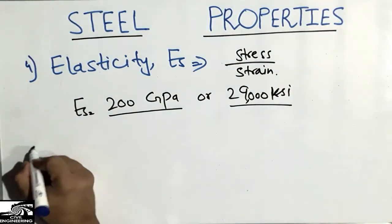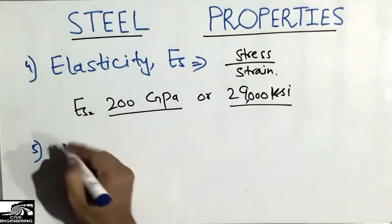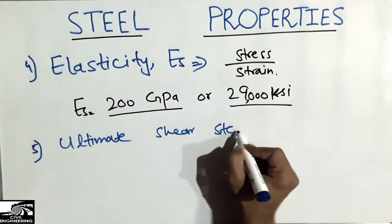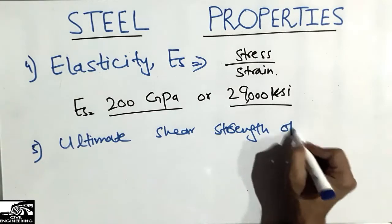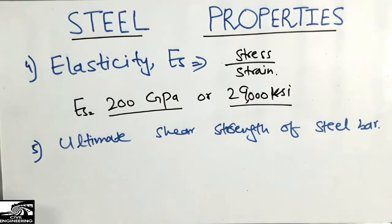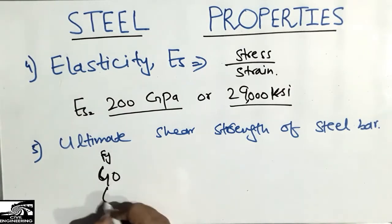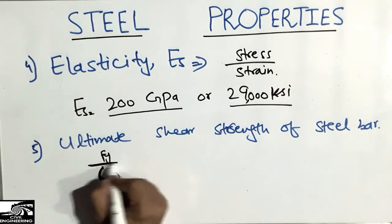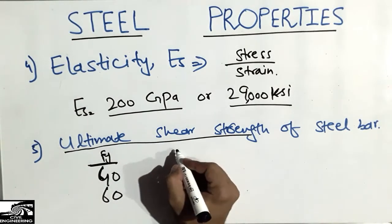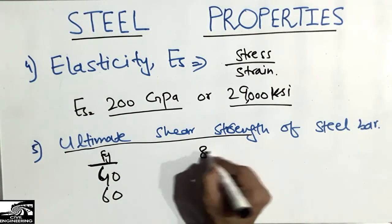The fifth and last property of the steel bar is the ultimate shear strength. As discussed, there are three different grades of steel, but the two most commonly used are Grade 40 and Grade 60. The ultimate shear strength is related to the yield strength — specifically, the ultimate shear strength of a steel bar is equal to 82% of its yield strength.